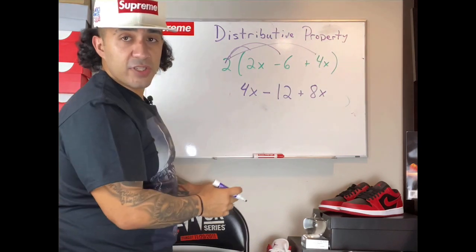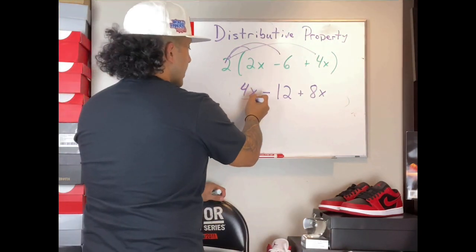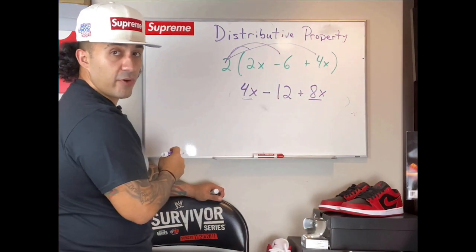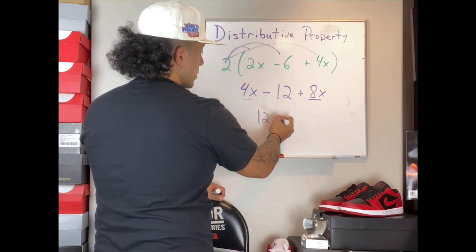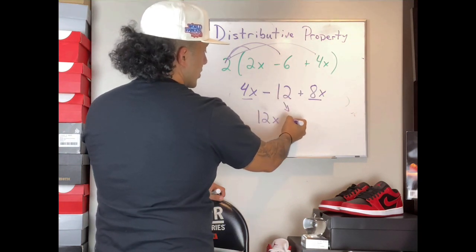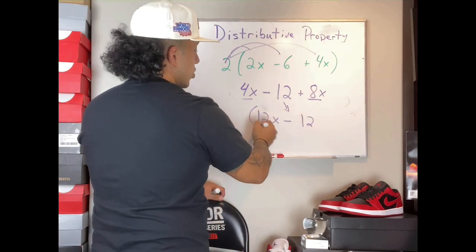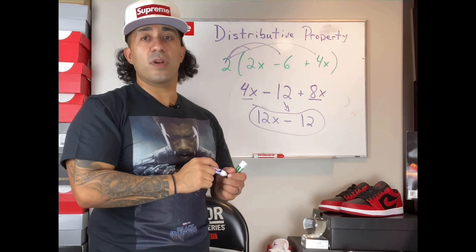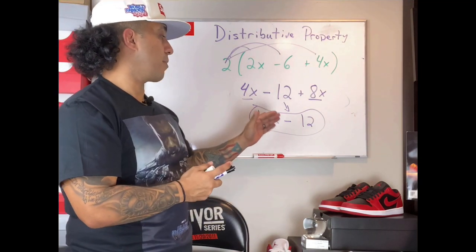We're going to ask ourselves: can we combine any of these terms? Well, four X and eight X have the same variable X, so four plus eight gives us 12X. I'm going to bring down the subtraction symbol and 12. These terms can no longer be simplified because they do not have the same variable. We're left with the final expression of 12X minus 12.